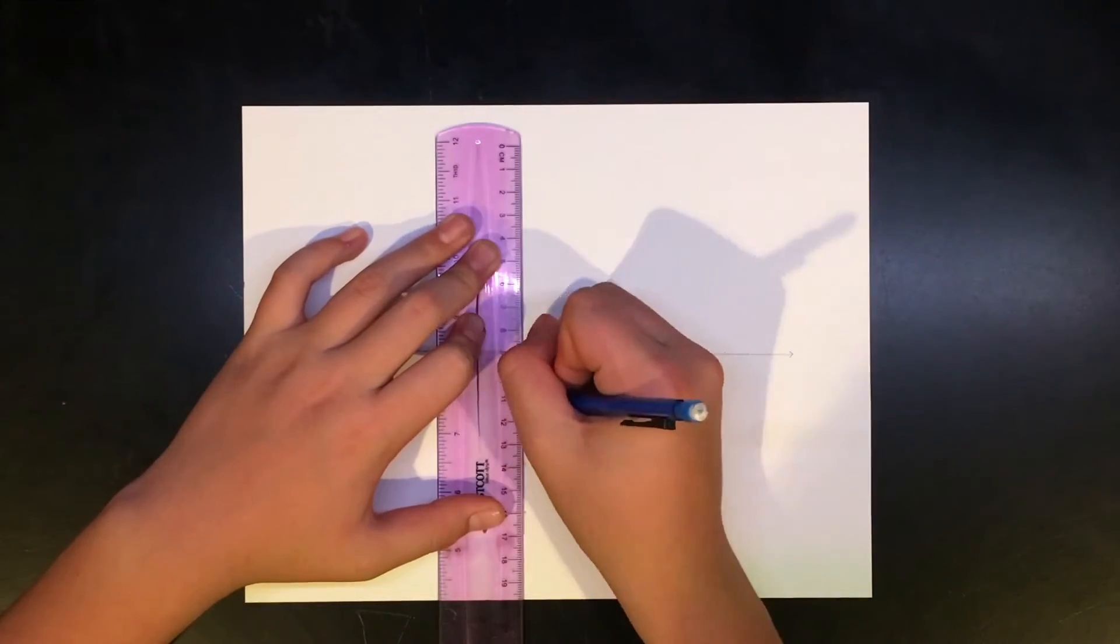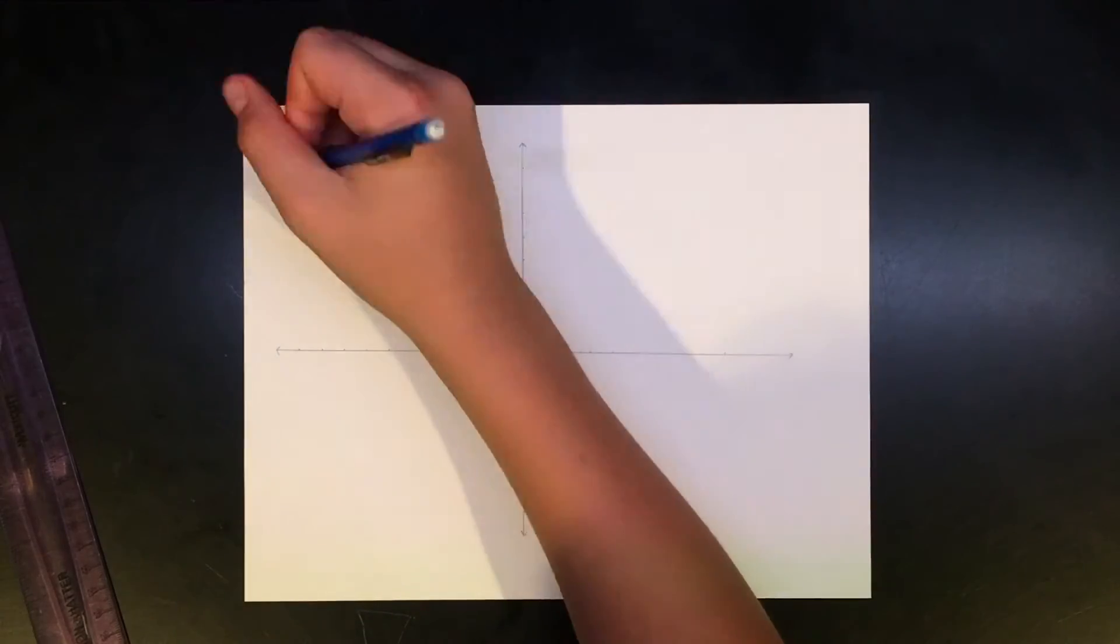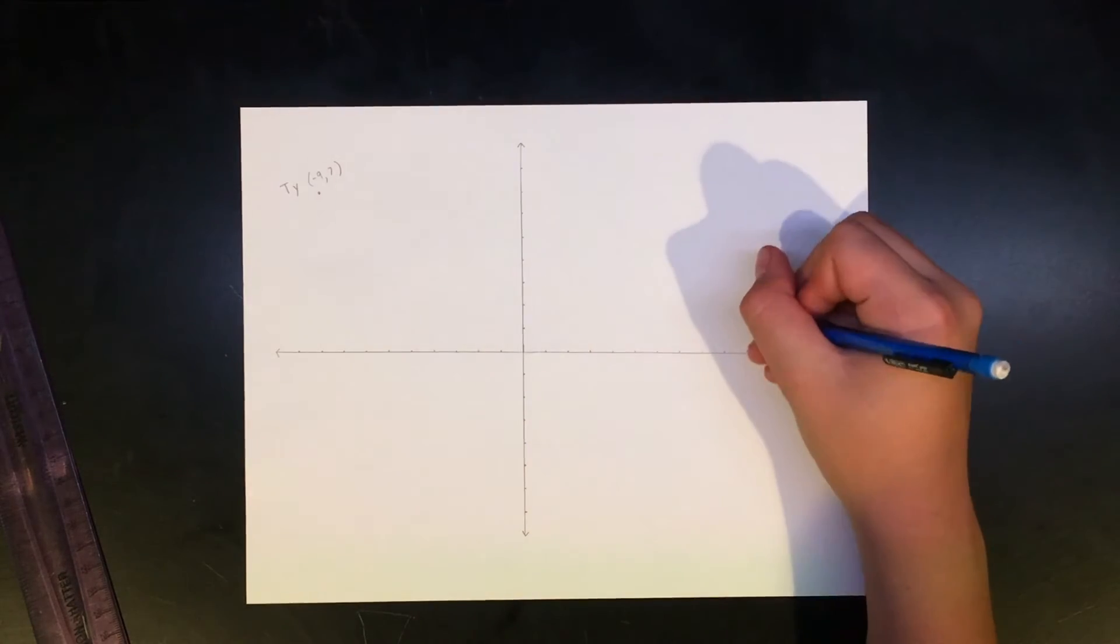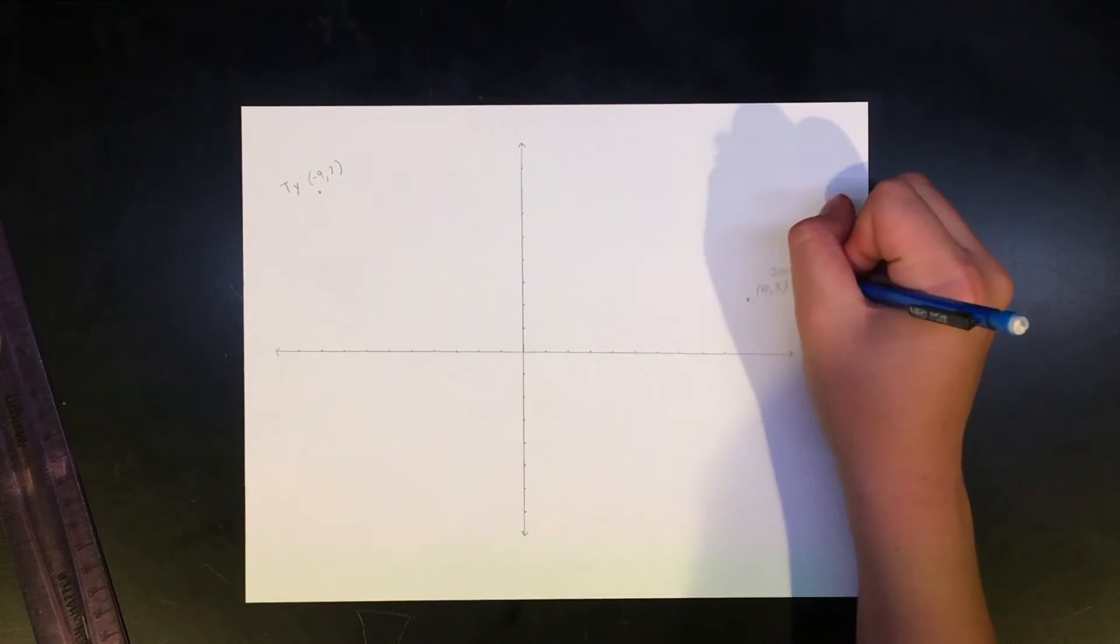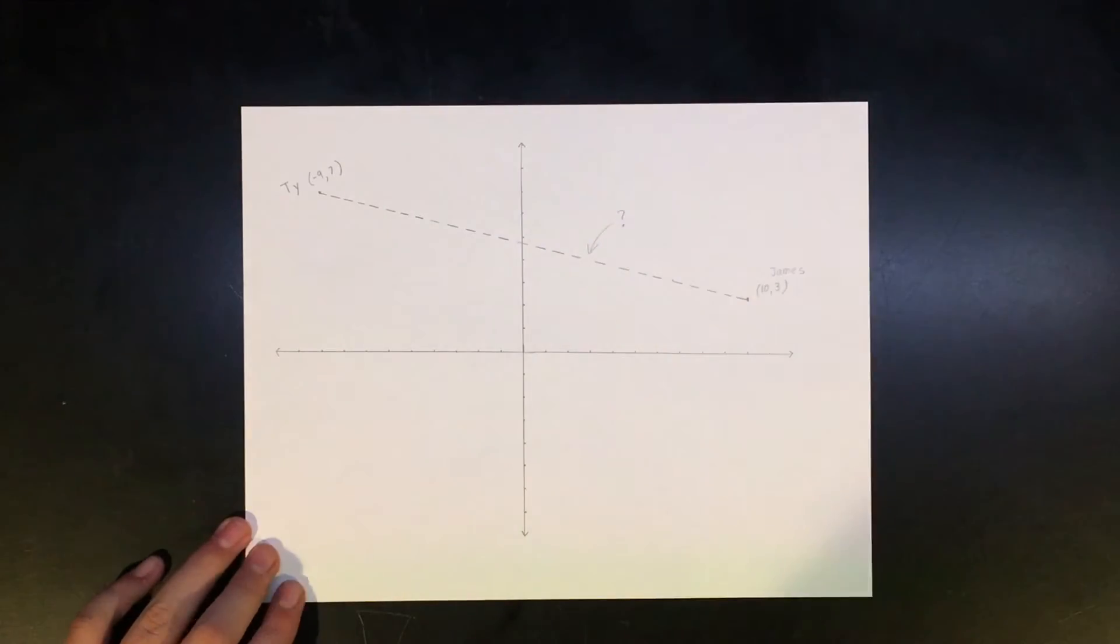Here is a sample question. Ty is at the point negative 9, 7 and he calls his friend James. James tells him he is at the point 10, negative 3. If the distance is in yards, how many feet are Ty and James separated?